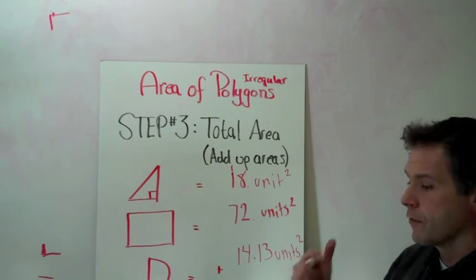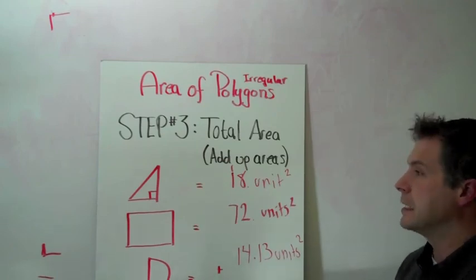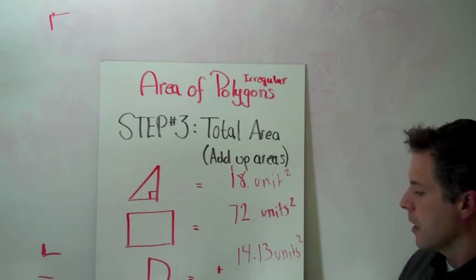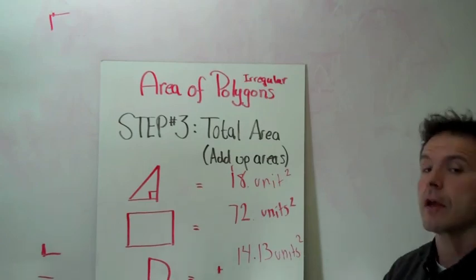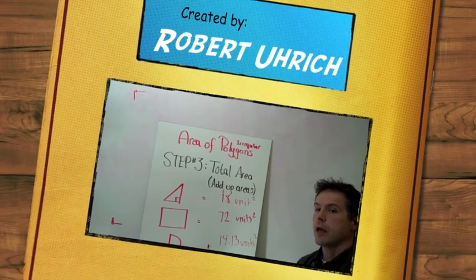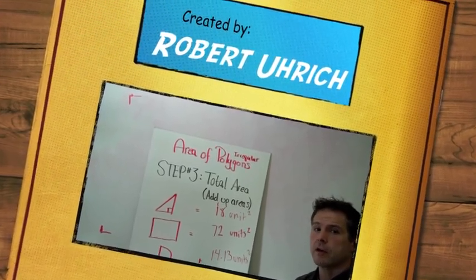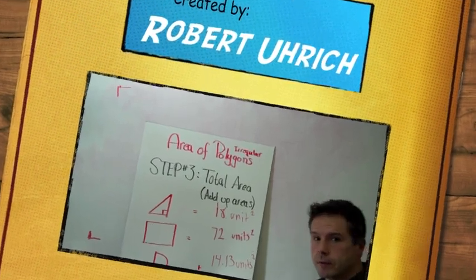Remember the three steps are, first, we want to decompose our polygon into its essential or simpler shapes. Then we need to find the areas of those shapes. And once we have the area of the shapes, we total those areas. And that's all. I hope this was very informative and helpful. Thank you.